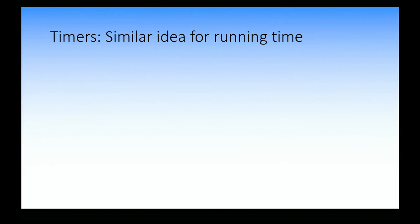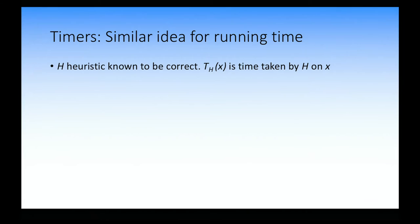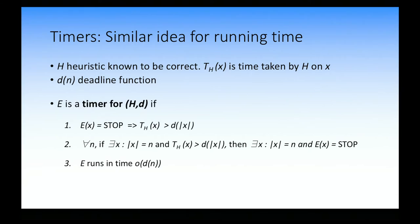So how do we translate this into the timing world? Try to come up with a similar idea for running time. We have a heuristic known to be correct — we're only worrying about the timing problem. t_h(x) is the time taken by heuristic h on input x. You're given a deadline function d(n): the amount of time you want to allow the heuristic to run on inputs of length n. We say e is a timer for a heuristic with a deadline function. If on any input x the timer says 'stop,' that means the heuristic is going to take more than the deadline amount of time.